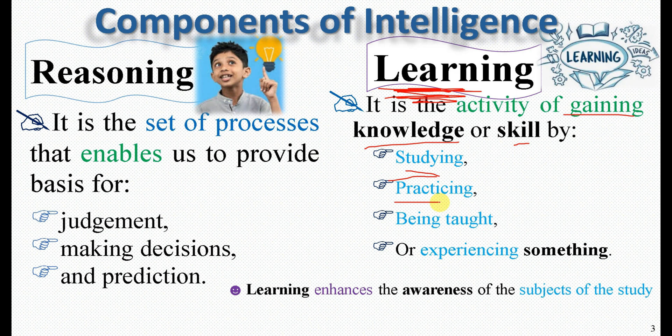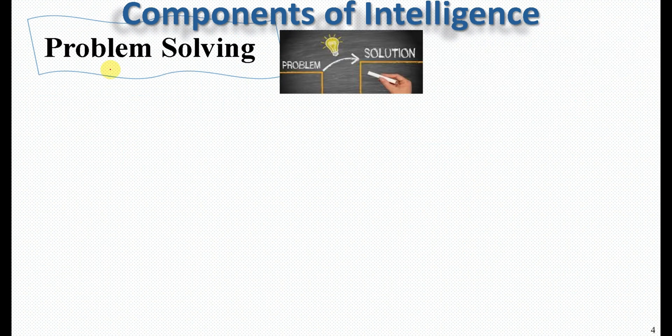The third component of intelligence is problem solving. There is a problem and you try to find the solution for that problem — we call it problem solving. It involves understanding the cause and the nature of the problem.